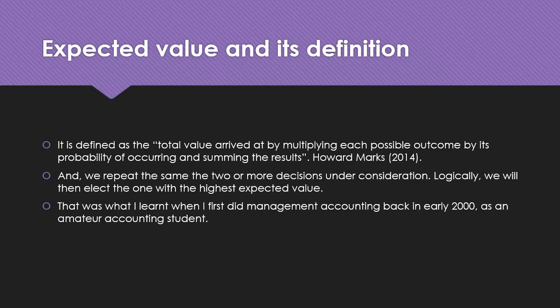So what is expected value and the definition? It is defined as the total value arrived at by multiplying each possible outcome by its probability of occurring and summing up the results. And if you read any other accounting textbooks, you find the same. If we repeat the same for two or more decisions under consideration, logically we will elect the one with the highest expected value, or prioritize resources to undertake the decision which gives the highest expected value. That is very logical and very rational. That was what I learned when I first did management accounting back in early 2000. There seemed to be nothing wrong with doing this — if you have two or three or more decisions, then expected value was a very scientific process of determining what the most desirable decisions to be made are.